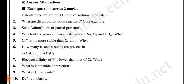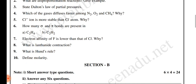Next, electron affinity and lanthanide contraction — we have the periodic table. Then Hund's rule and define molarity — molarity falls under stoichiometry. And Hund's rule is part of atomic structure. We have the atomic structure covering the remaining work.